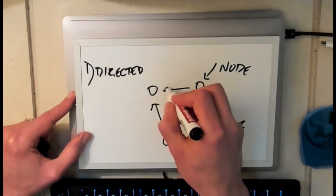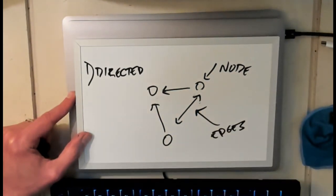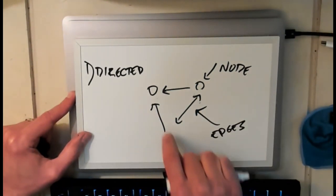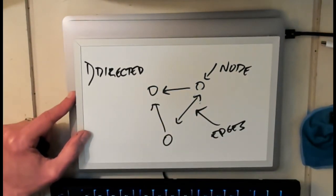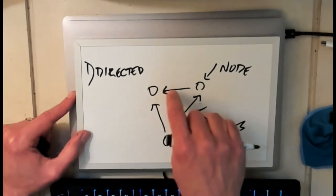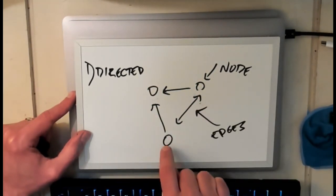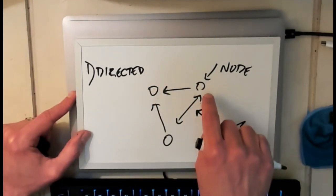But now imagine that I add some directionality to this graph. So now I can reach this node and I can reach this node but this graph is no longer fully connected or it's no longer connected. The reason it's not connected is because if I start at this node I can't reach the other two nodes because they have an edge to me but I don't have an edge in the other direction.